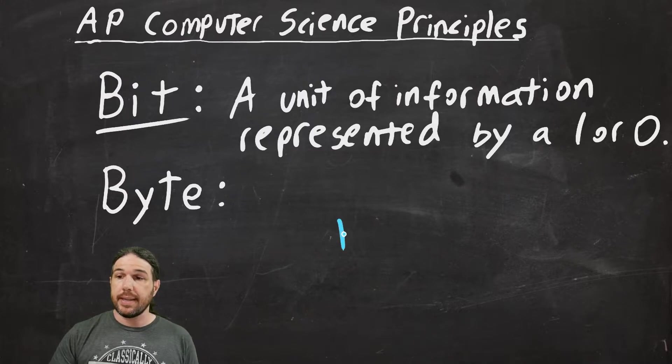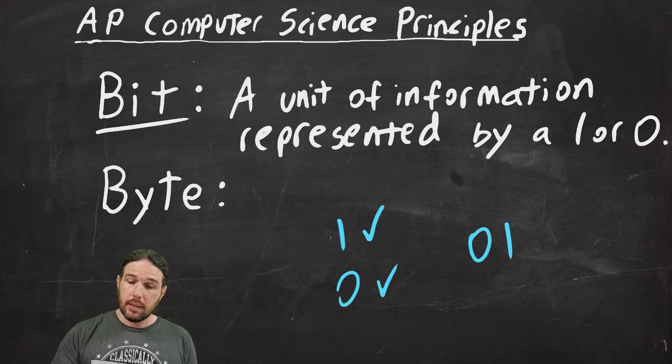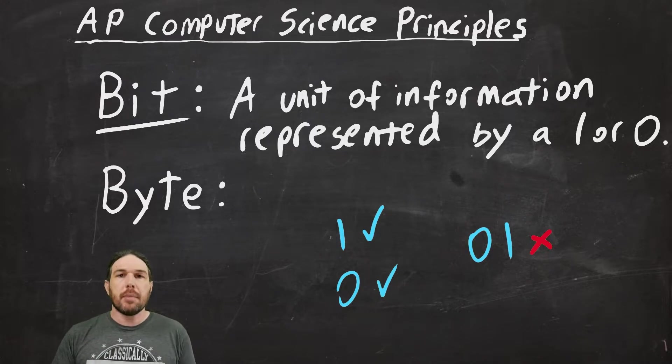To put this a little bit more into perspective, a 1 is a bit. A 0 is a bit. A 0 and then a 1 is not a bit. That is two bits, right? There's one 0 and one 1. There are two, think of them like digits.